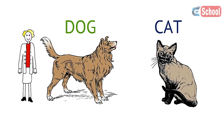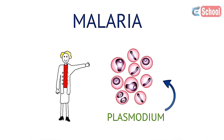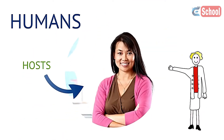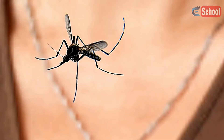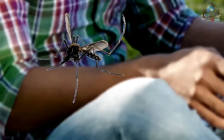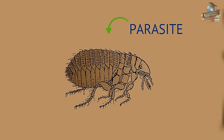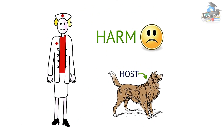Many parasites spread diseases, such as malaria. The malaria parasite is called plasmodium, and humans are the host that plasmodium feeds on. Mosquitoes inject the plasmodium parasites into the bloodstream, and in doing so they act as a vector for the disease, spreading malaria into another organism without being affected by it. A parasite lives on or in another living organism, called the host, causing it harm.